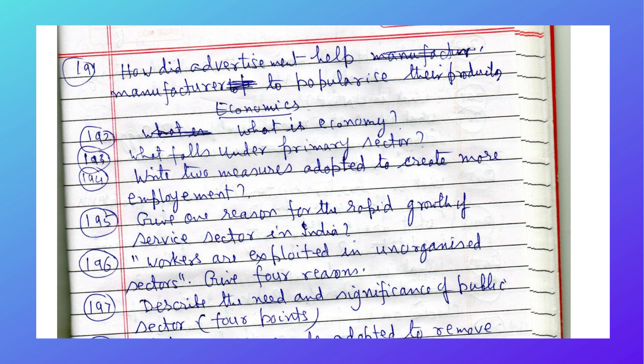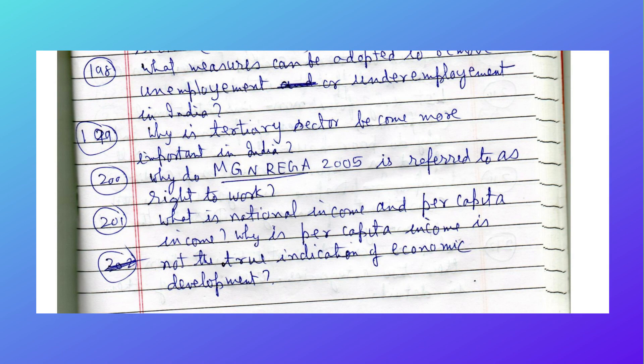Now we'll go to the Economics part. What is an economy? What falls under the primary sector? Name two major steps adopted to create more employment. Give one reason for the rapid growth of the service sector in India. Workers are exploited in the unorganized sector — give four reasons. Describe the need and significance of the public sector in four points.